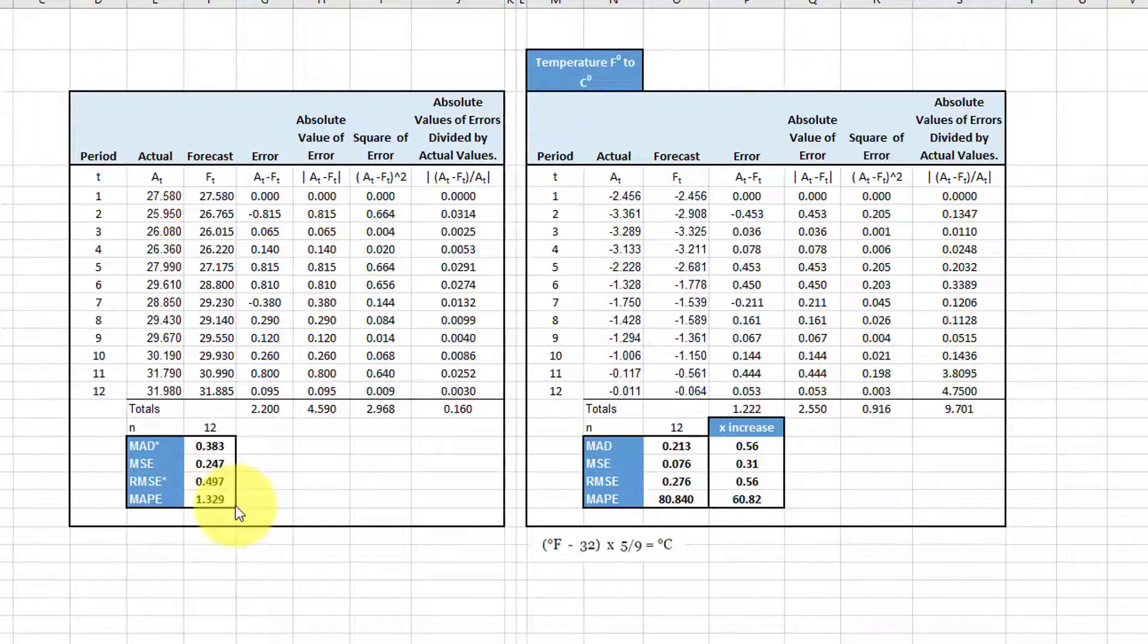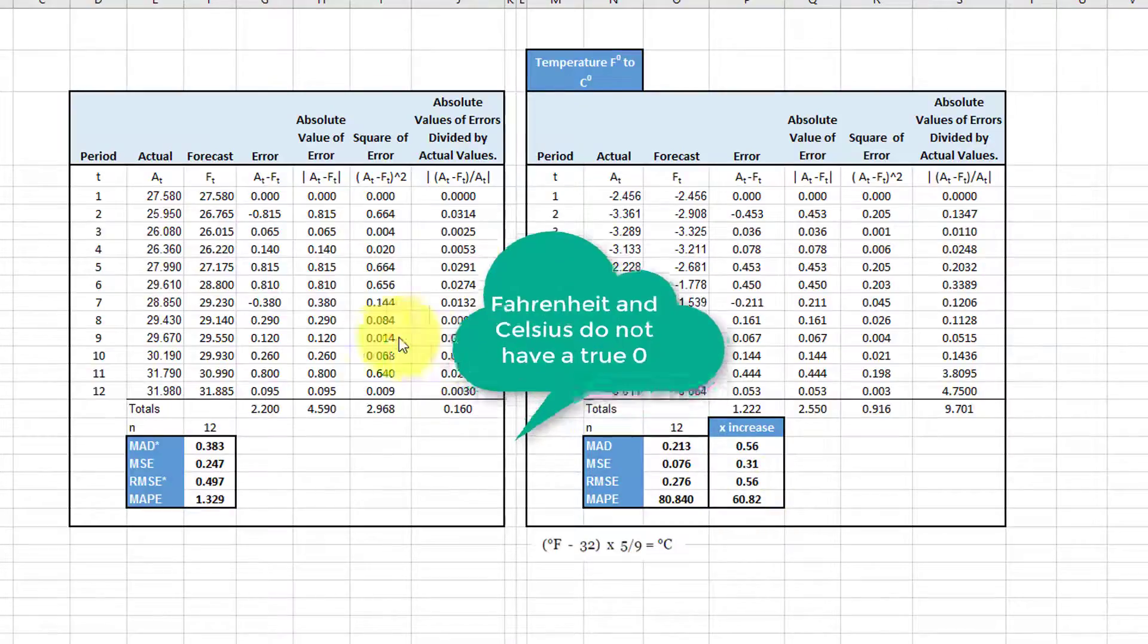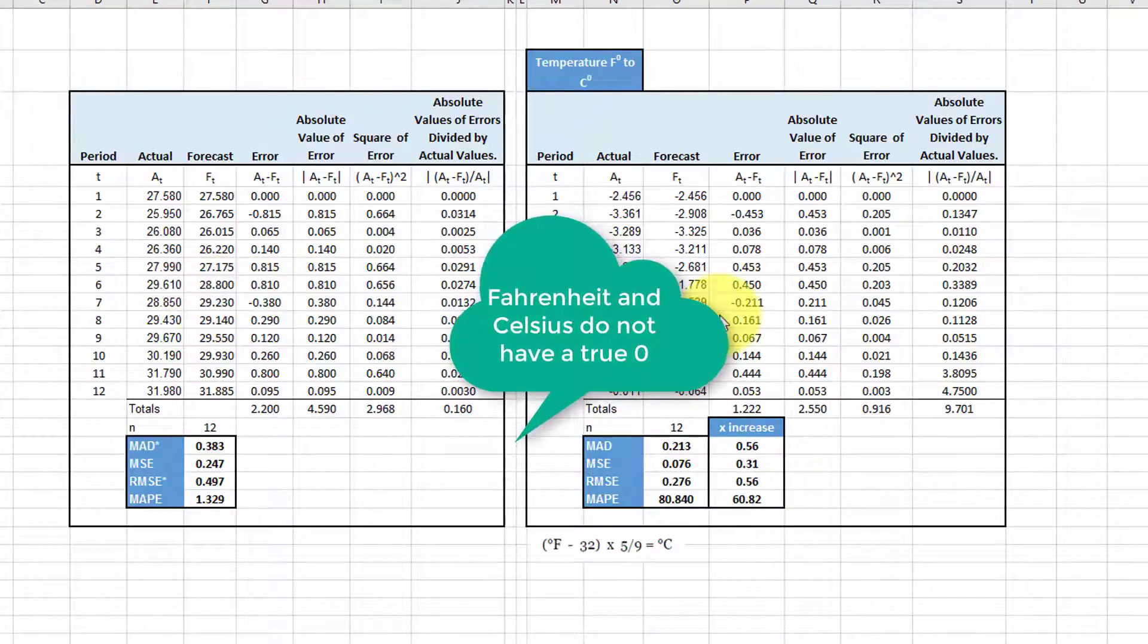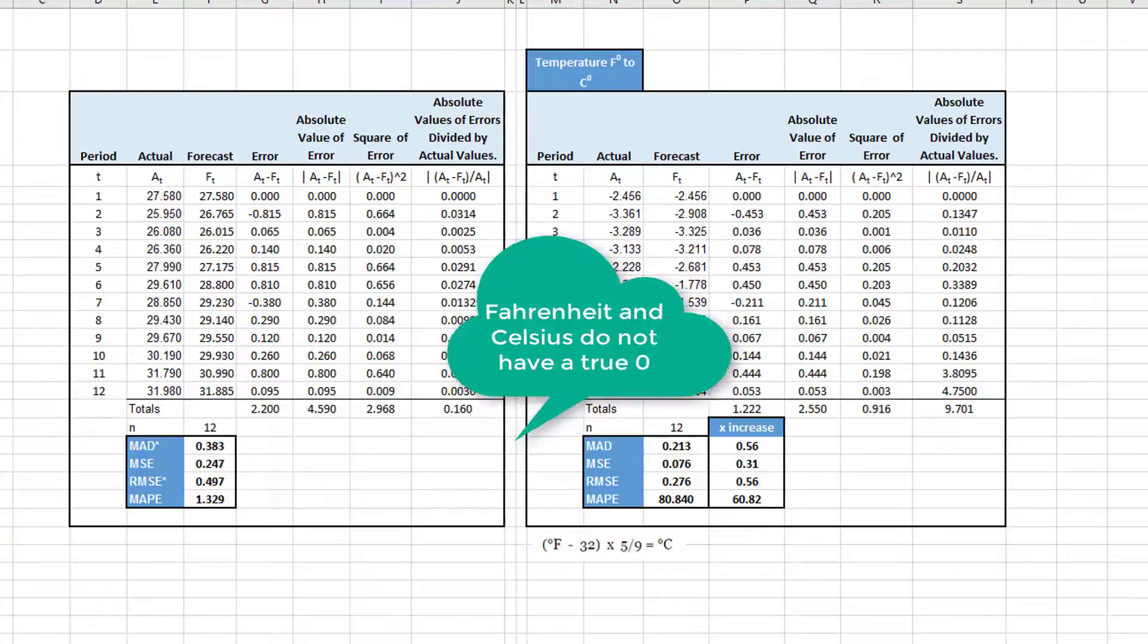But look at what happened to MAPE. MAPE increased 61 times, 61 times as large just because we converted from Fahrenheit to Celsius.